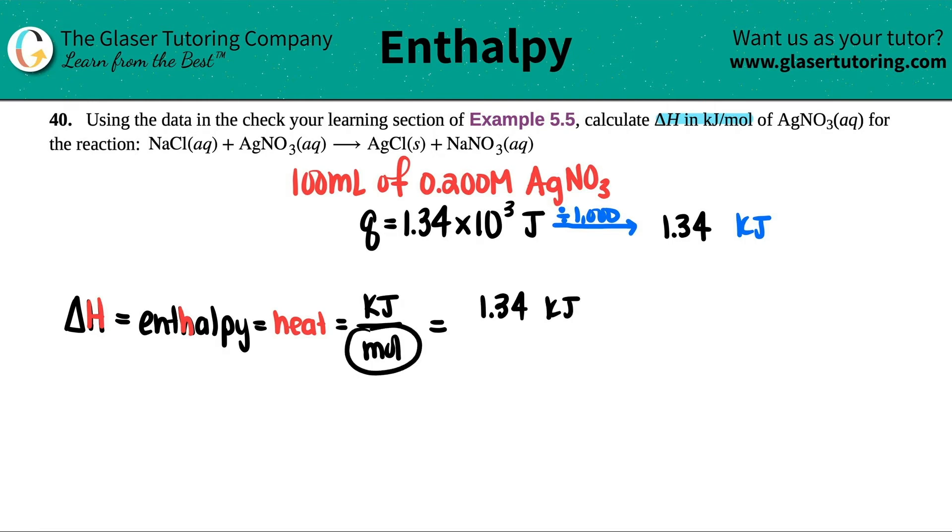Now we have to find out how many moles were produced. They gave me a volume, 100 milliliters, and a molarity. How do I get moles from a molarity and a volume? Remember this formula: molarity equals moles divided by liters. We have the molarity, we have a volume, however this is in mL. If I'm using this formula, it needs to be in liters. To convert from mL to liters, I divide by 1000, so this would be 0.100 liters.